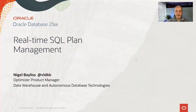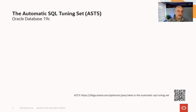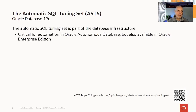Hi everyone, this is a short introduction to real-time SQL plan management available in Oracle Database 23 AI. Before I dive into the details of this new feature, I just want to introduce you to a new piece of infrastructure called the automatic SQL tuning set. We added this in Oracle Database 19c — originally it was added to support automation in the Autonomous Database, but subsequently its use has grown and it now supports lots of different types of automation.